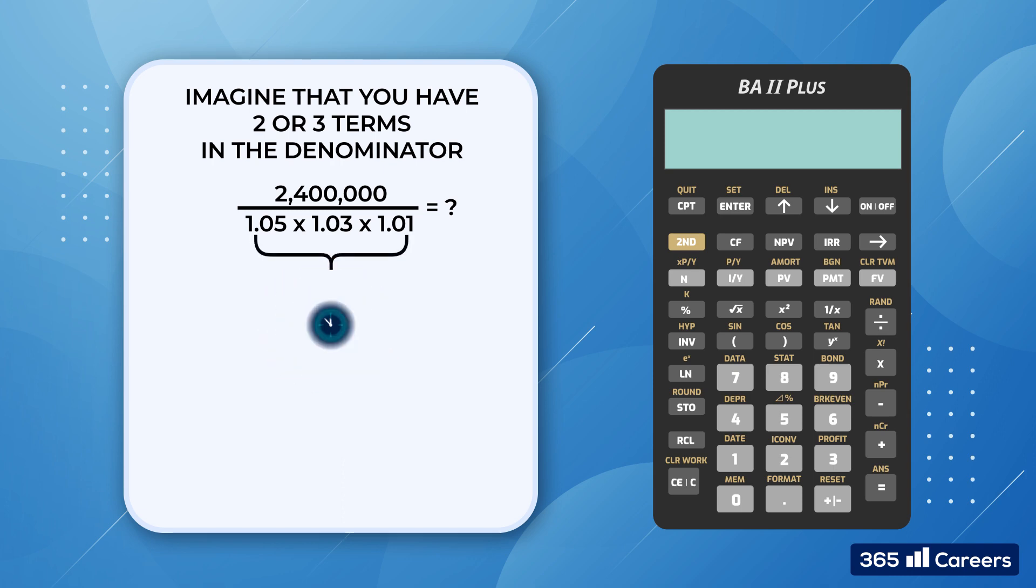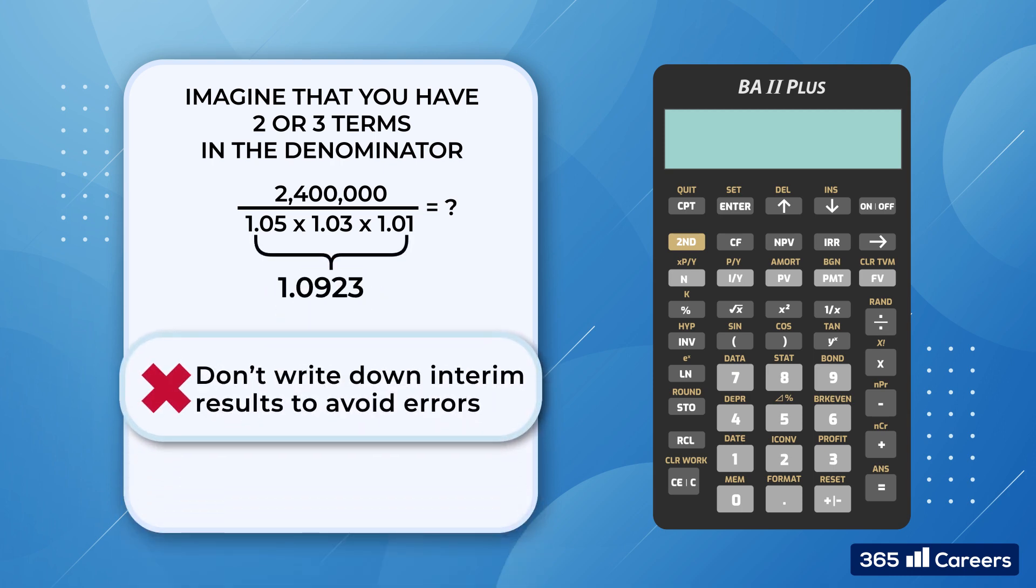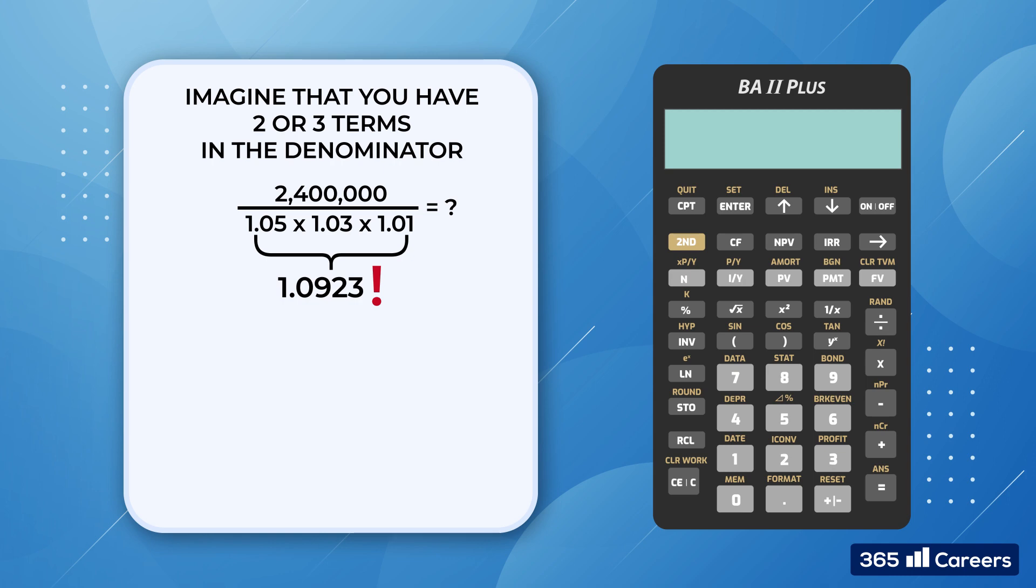As a rule of thumb, try to avoid writing down any interim results. If you write down an interim result, then you have to put it back in the calculator. That's why there's always a chance to make an error. When you absolutely need to save some interim results, the Texas Instruments BA2 Plus has a built-in memory function. But we'll talk about this later.